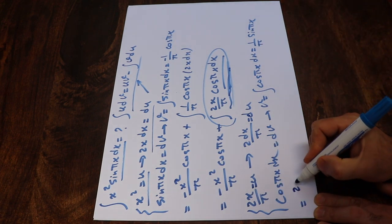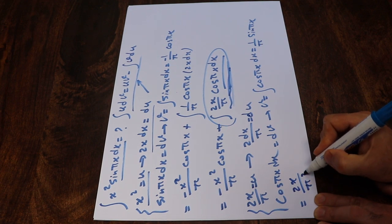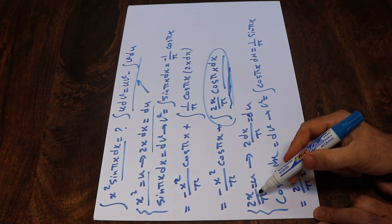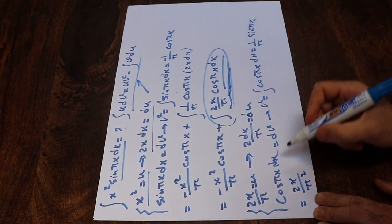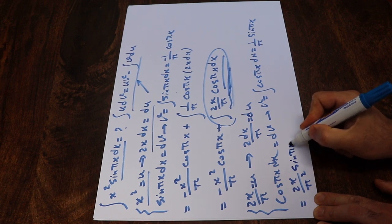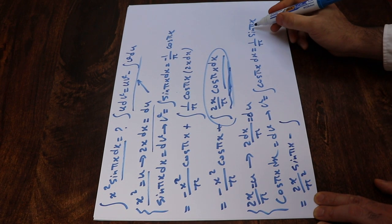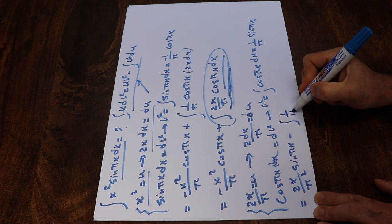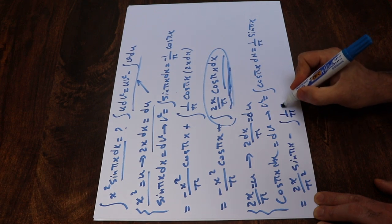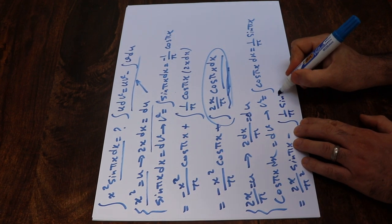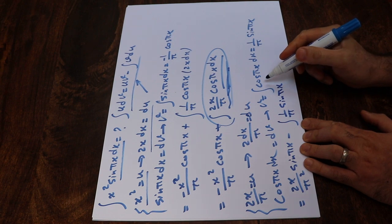That is u times v, giving 2x divided by π² times sine(πx), minus the integral of v du. That is 1 divided by π times sine(πx) times du.